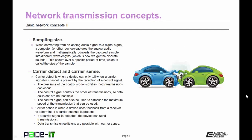Then there's sampling size. When converting from an analog audio signal to a digital signal, a computer or other device captures the analog audio waveform and mathematically converts the captured sample into different wavelengths, which is how we get the discrete sounds. This occurs over a specific period of time, which is called the size of the sample, or the sampling size.